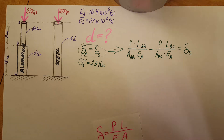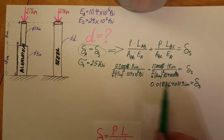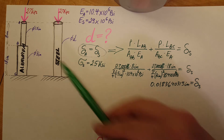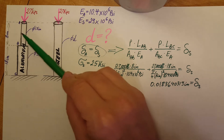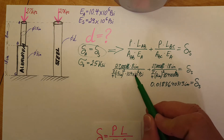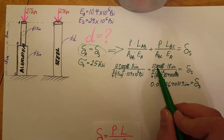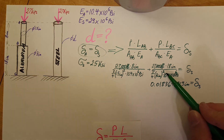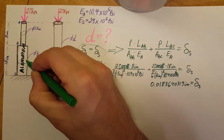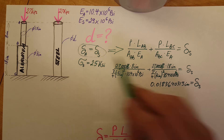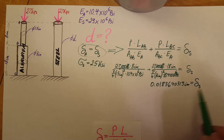Plugging in all values: the force times the length of section AB divided by its cross-sectional area, times E of aluminum, plus 27,000 times 18 inches divided by the cross-sectional area of section BC, times E of aluminum — this equals the deformation of the aluminum piece, which also equals the deformation of steel.